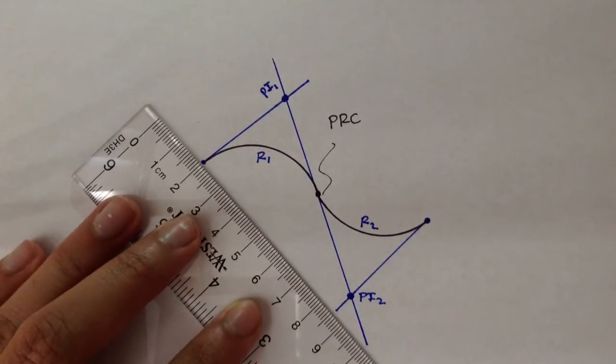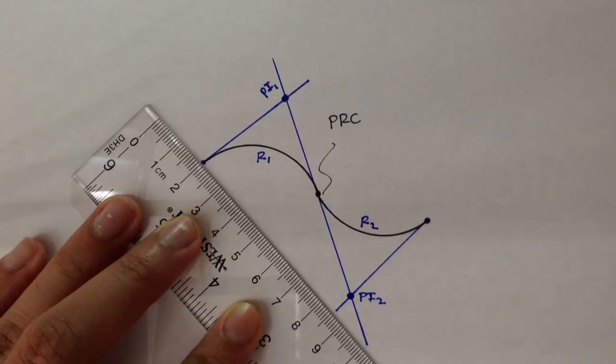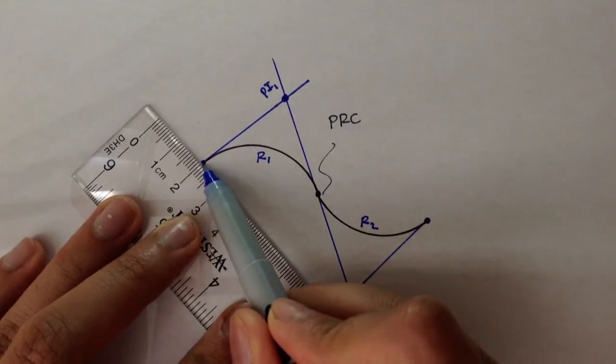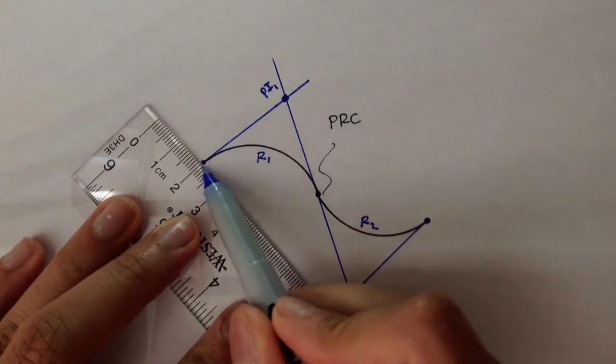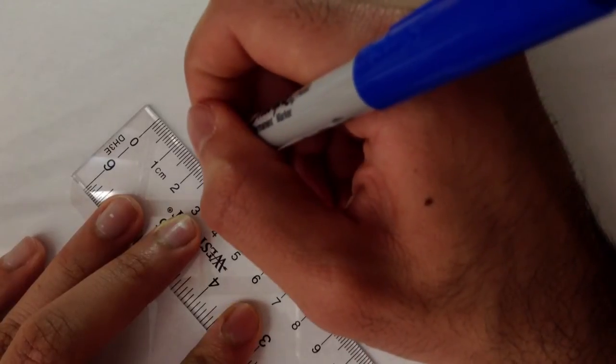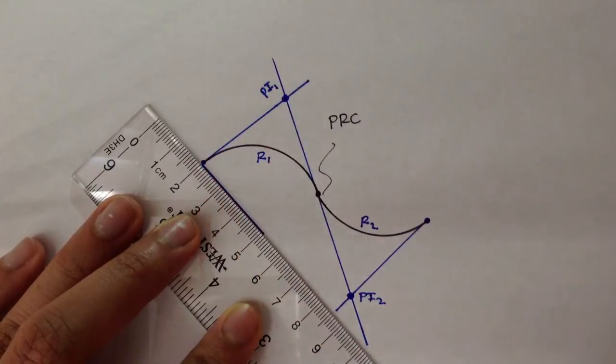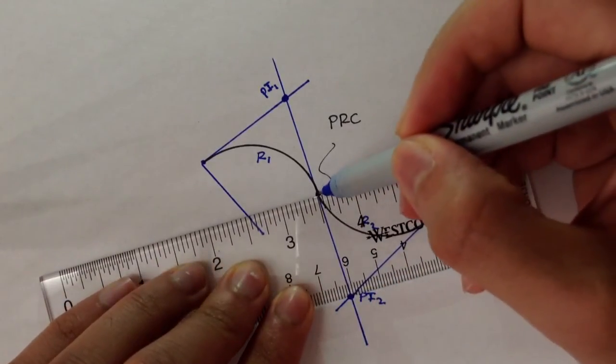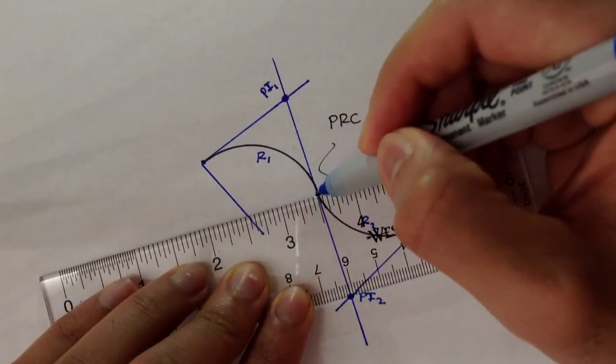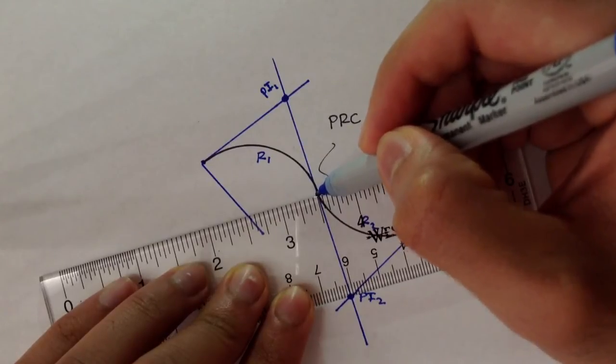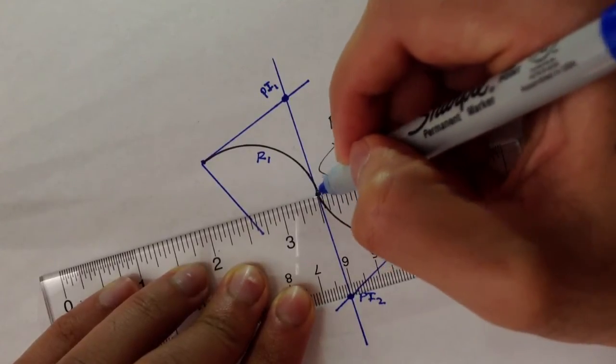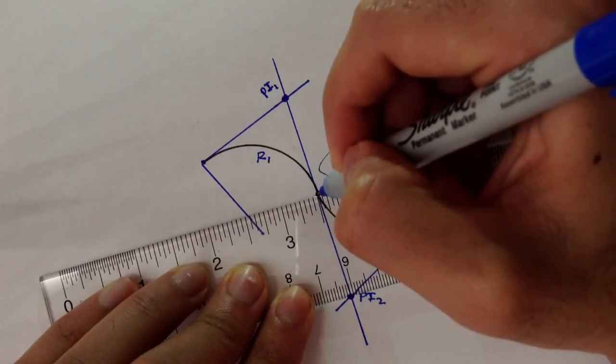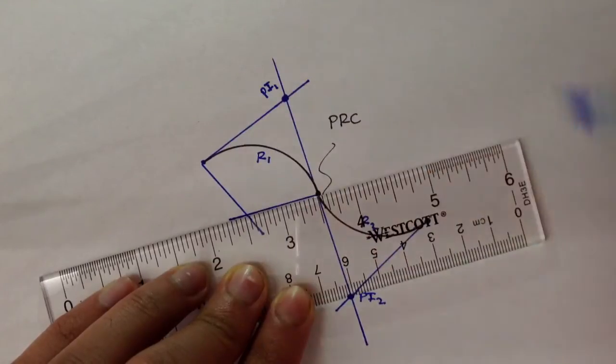So if we try to find the origin of both of these curves, if I drew a perpendicular line to this tangent here, or at BC1, I'd have a line that looks something like that. And if I drew a perpendicular line to EC1 or BC2, beginning of curve 2 or end of curve 1, I'd have a line that looks something like that.